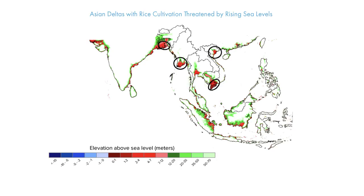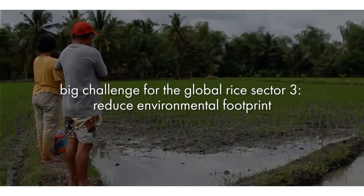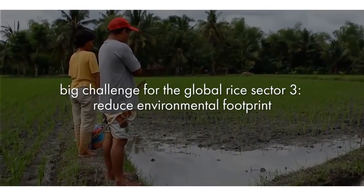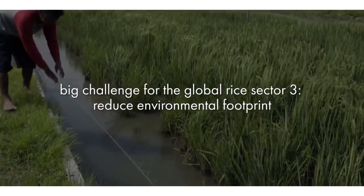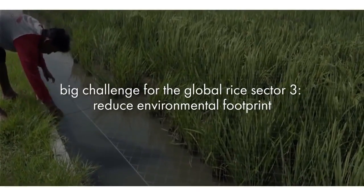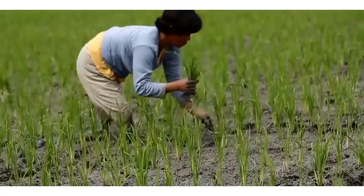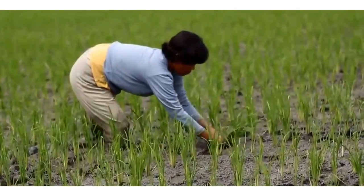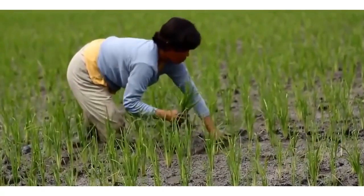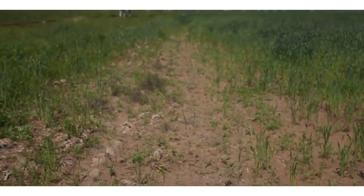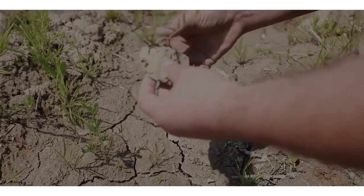The third challenge is that we need to reduce the environmental footprint of rice. Rice production consumes on average between 3,000 to 5,000 liters of water for each kilogram of rice produced — a massive amount. Rice also accounts for 5 to 10% of global methane emissions, one of the major greenhouse gases. At the same time, rice soils can also sequester large amounts of carbon. So finding options to reduce the broader environmental footprint is one of the key challenges for the rice sector.